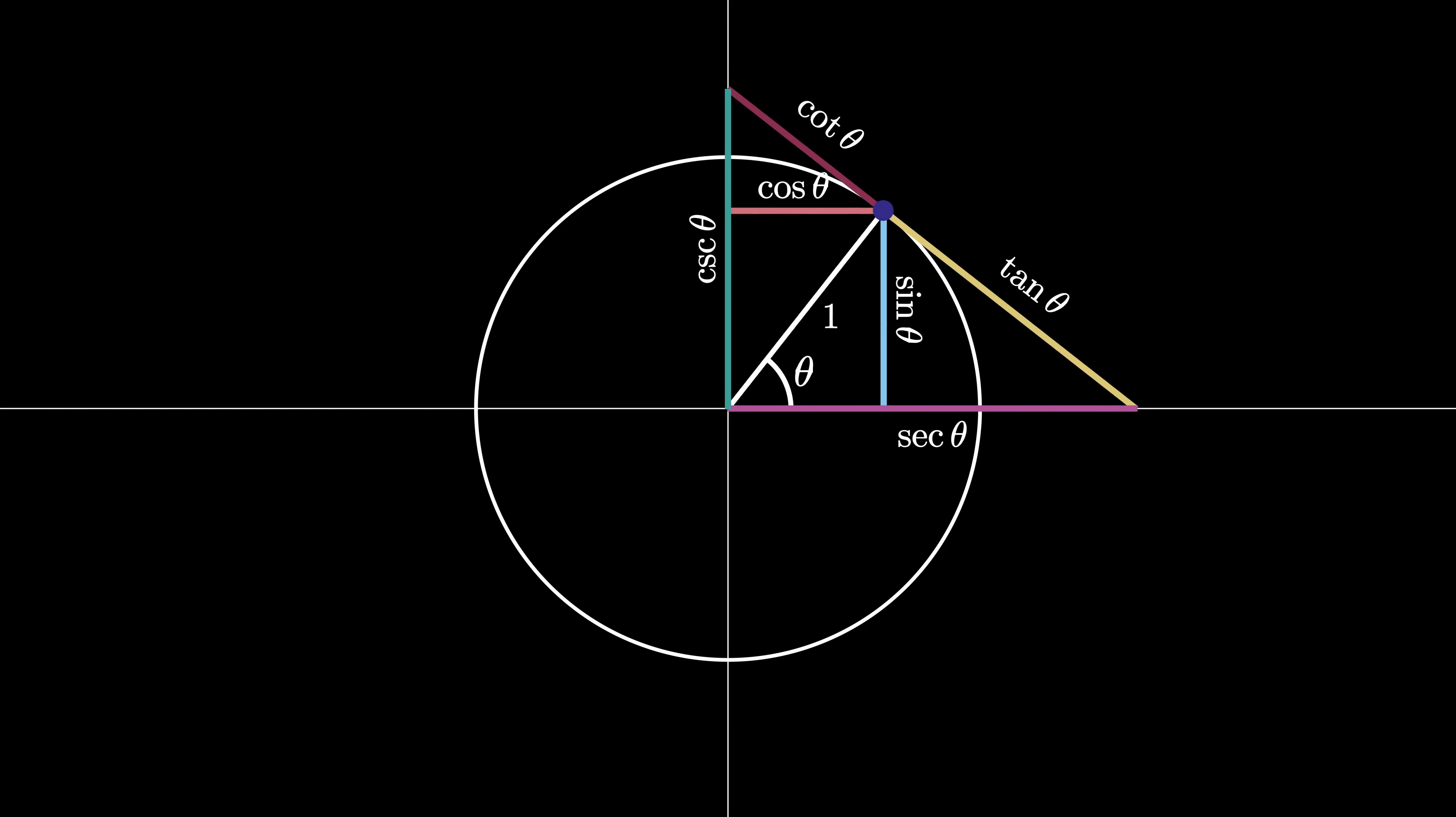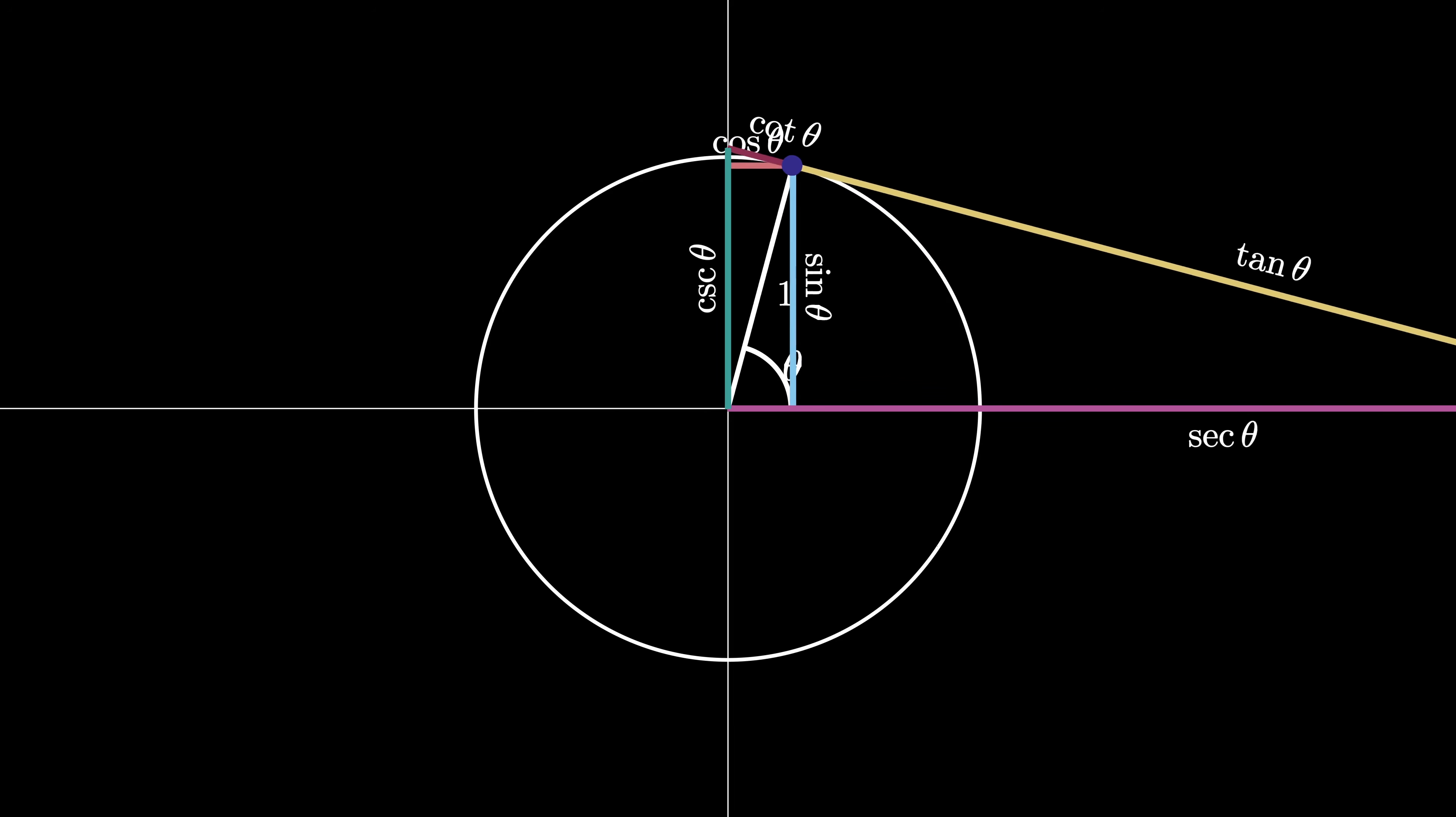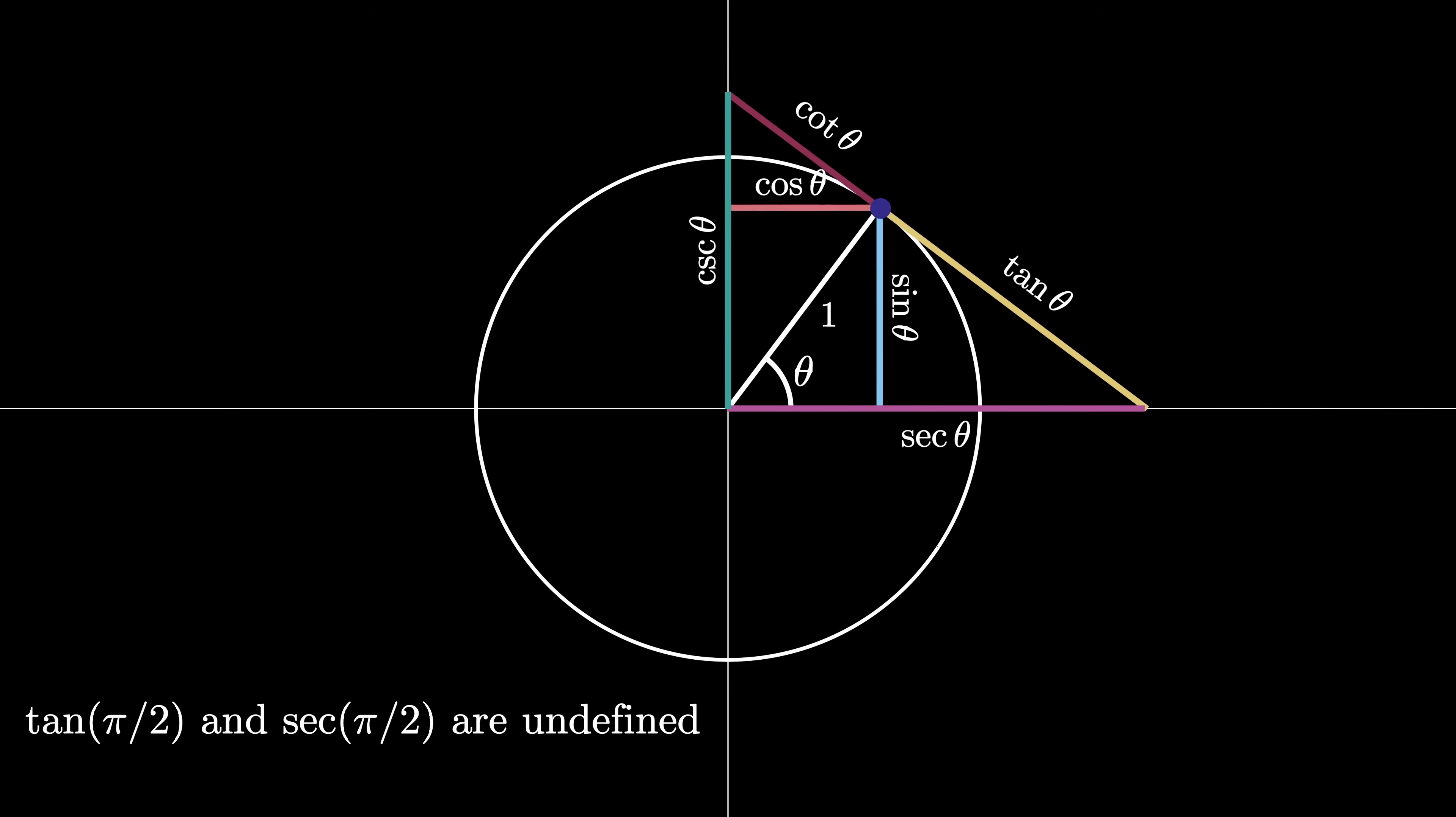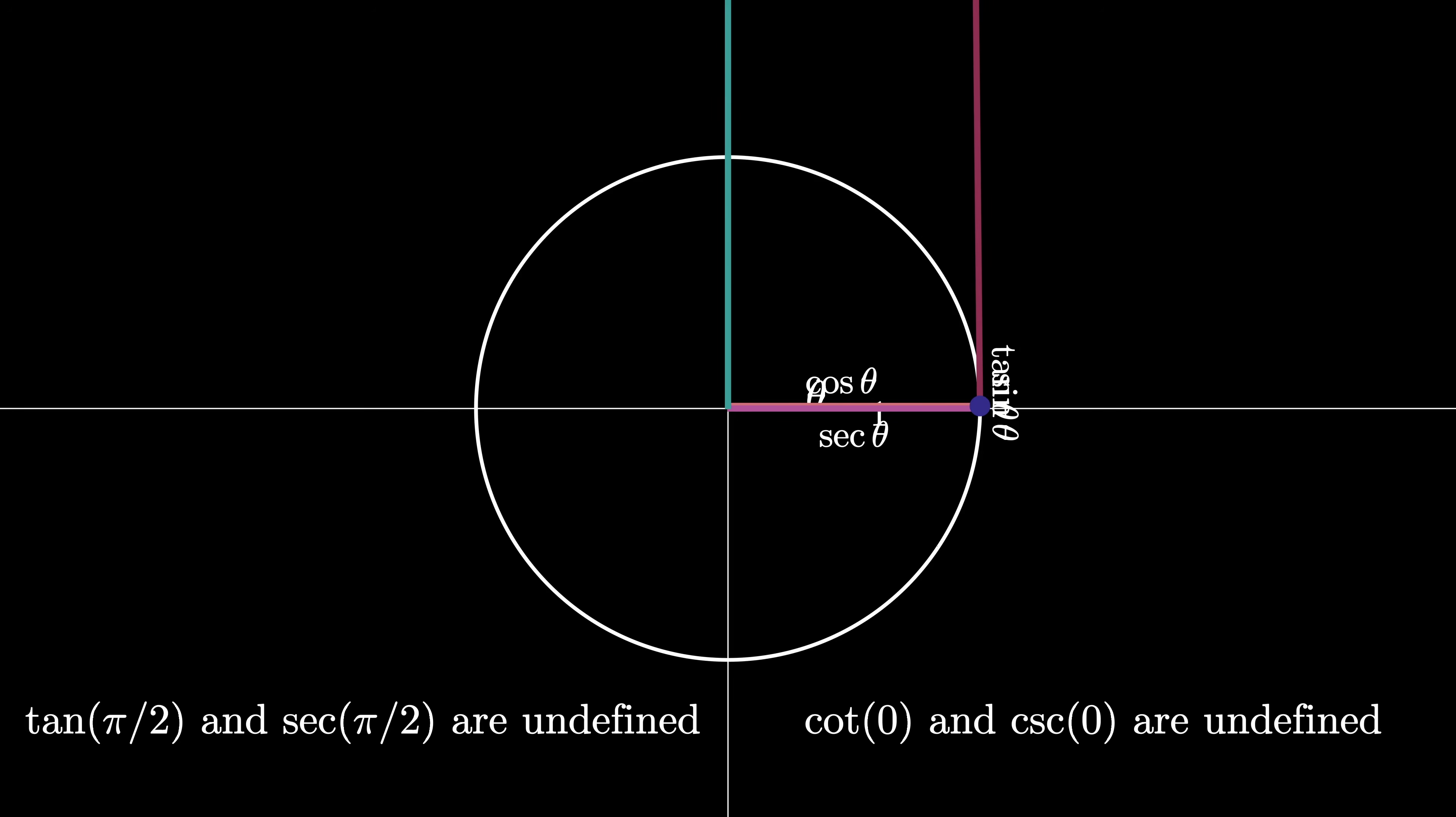As we change the angle theta, we see that all of these values change as well. In fact, if we let theta be pi over 2, we see that tangent and secant are undefined at this point because those two lines don't intersect along the x-axis. Likewise, if we let theta vary all the way down to 0, we see a similar fact about the cosecant and the cotangent of 0. They are both undefined as well.